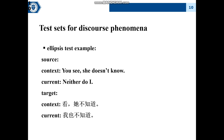The last one is an ellipsis example. From the context, we can identify that the omitted verb is 'null.' When we translate the current sentence, we should add the omitted verb back in the translation.